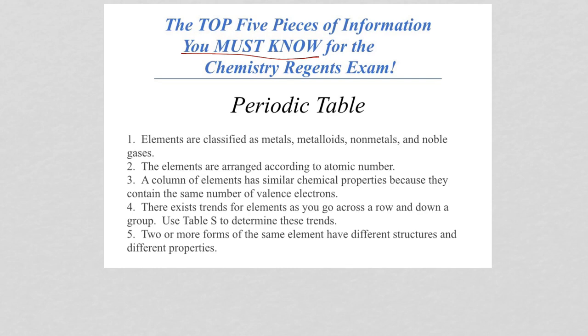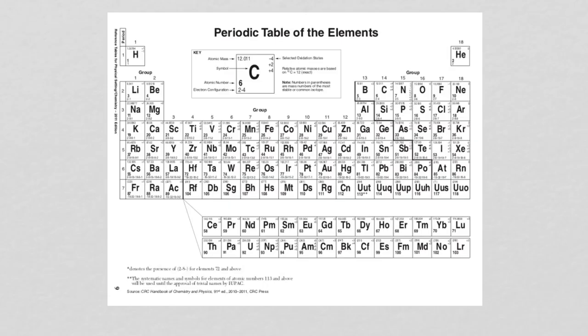You have your metals, metalloids, non-metals, and noble gases. So when you look at the periodic table, remember you have your metals comprise most of the table. Then your semi-metals or metalloids are here.